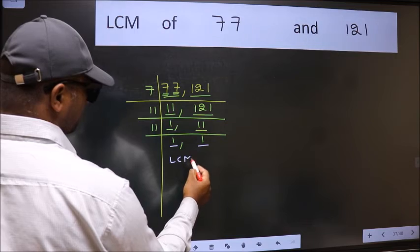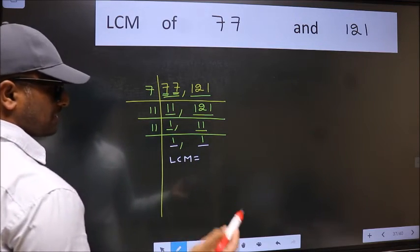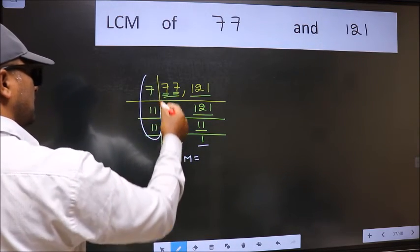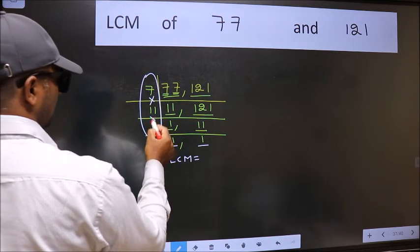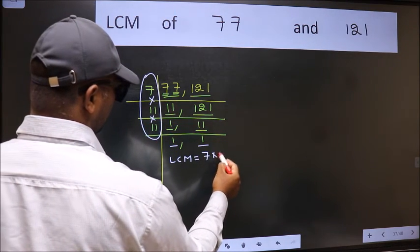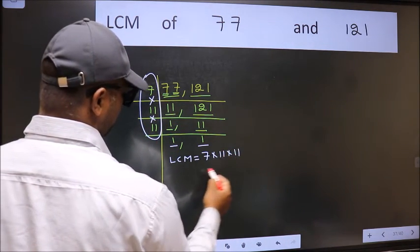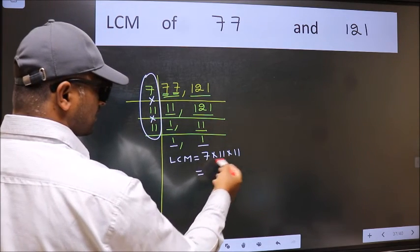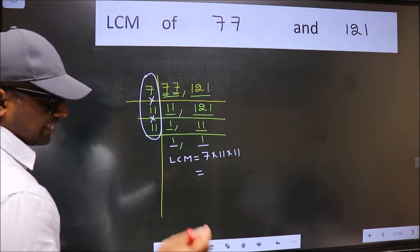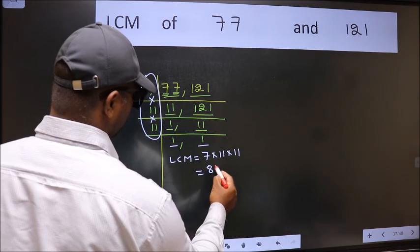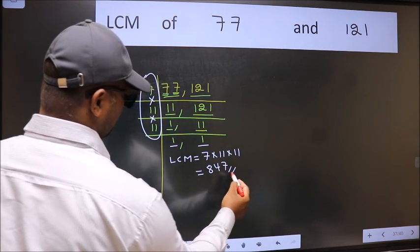So our LCM is, LCM is the product of these numbers. That is 7 into 11 into 11. When we multiply these numbers, we get 847 is our LCM.